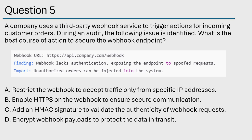I'll give you about five seconds to think about this one. Do I want to add an HMAC or restrict the webhook to accept traffic only from specific IP addresses? If you said A, you would be incorrect — it's only partially effective. While we can limit the traffic, it doesn't verify the request, and since it doesn't verify the request, an attacker can spoof the source and bypass the measure. We really need that authentication. If you look at the question, it's exposing the endpoint to spoofed requests — it lacks authentication. What is HMAC? HMAC is hash-based message authentication code — authentication is in the name. If you know the acronyms, it almost answers the question for you. The answer is C.